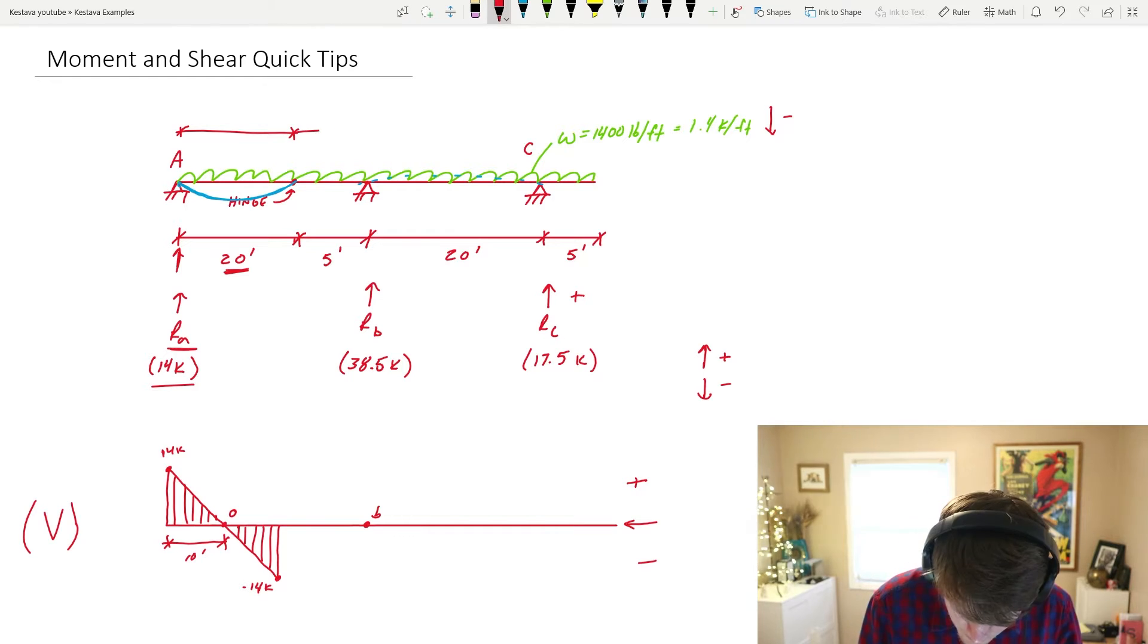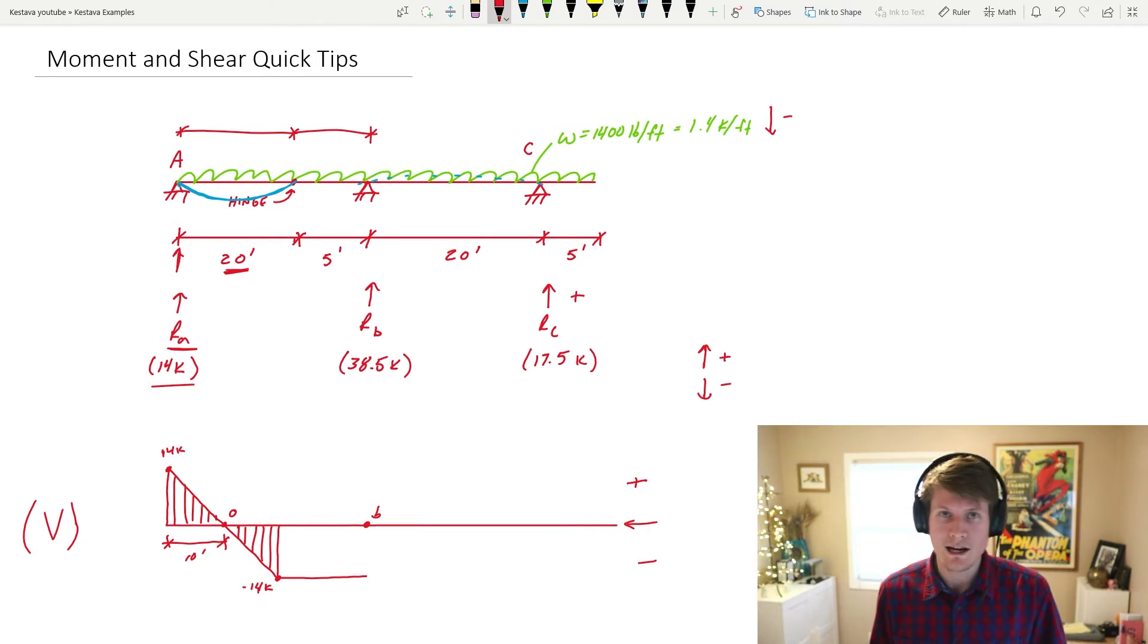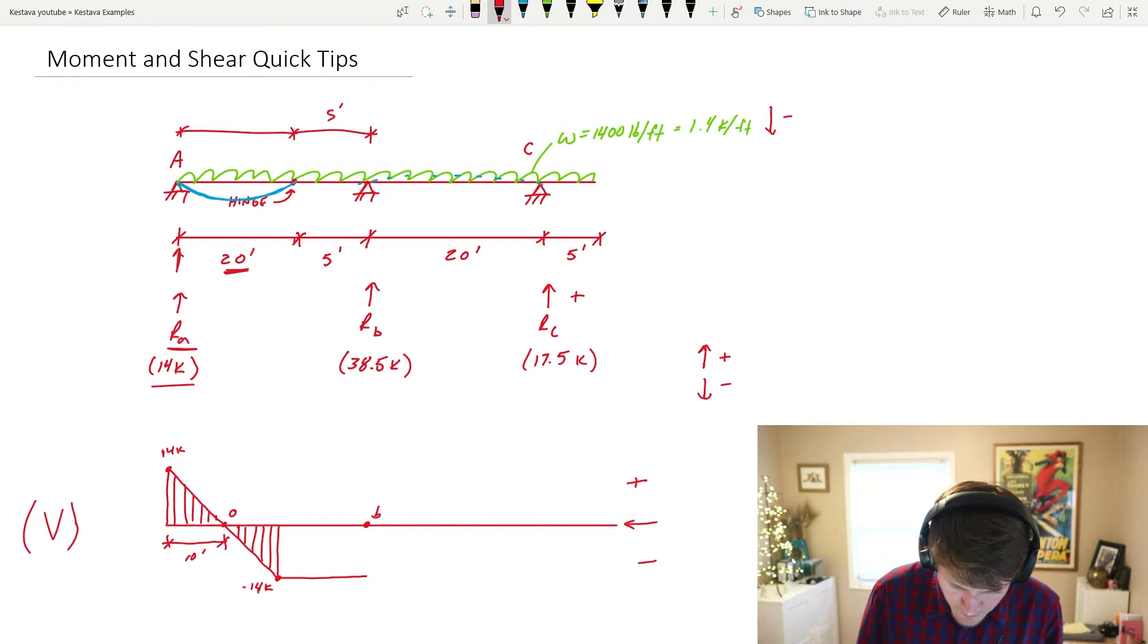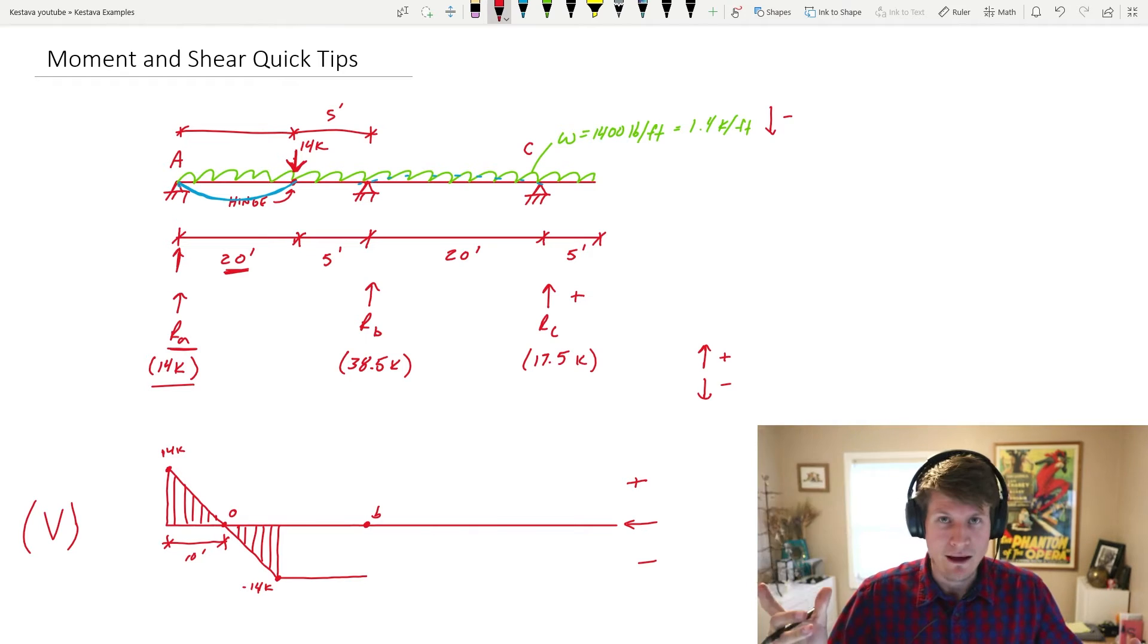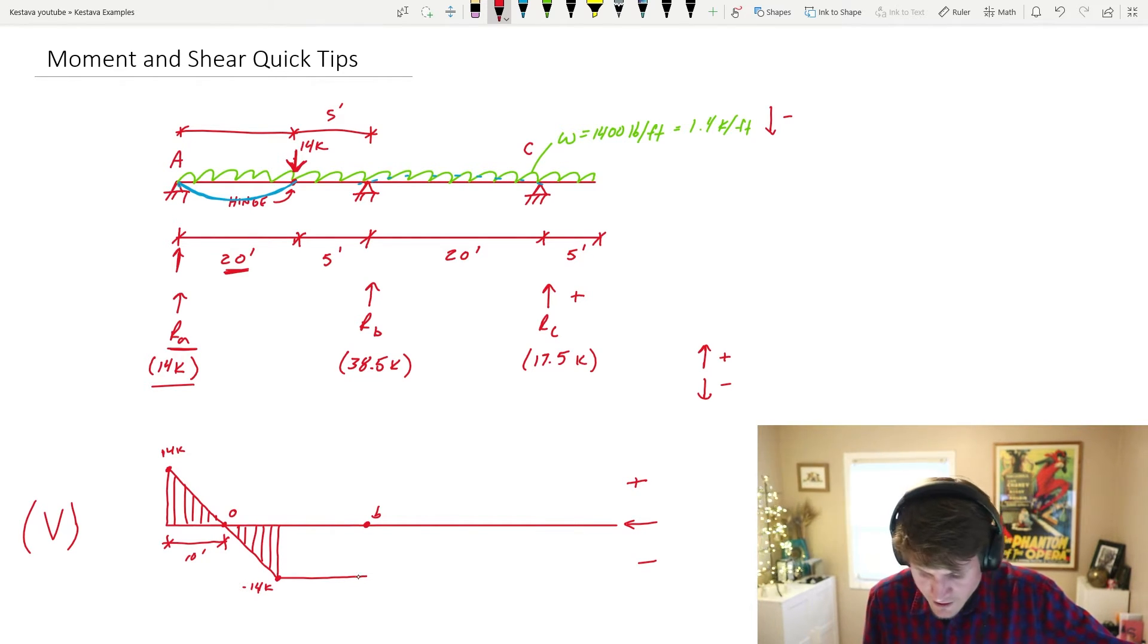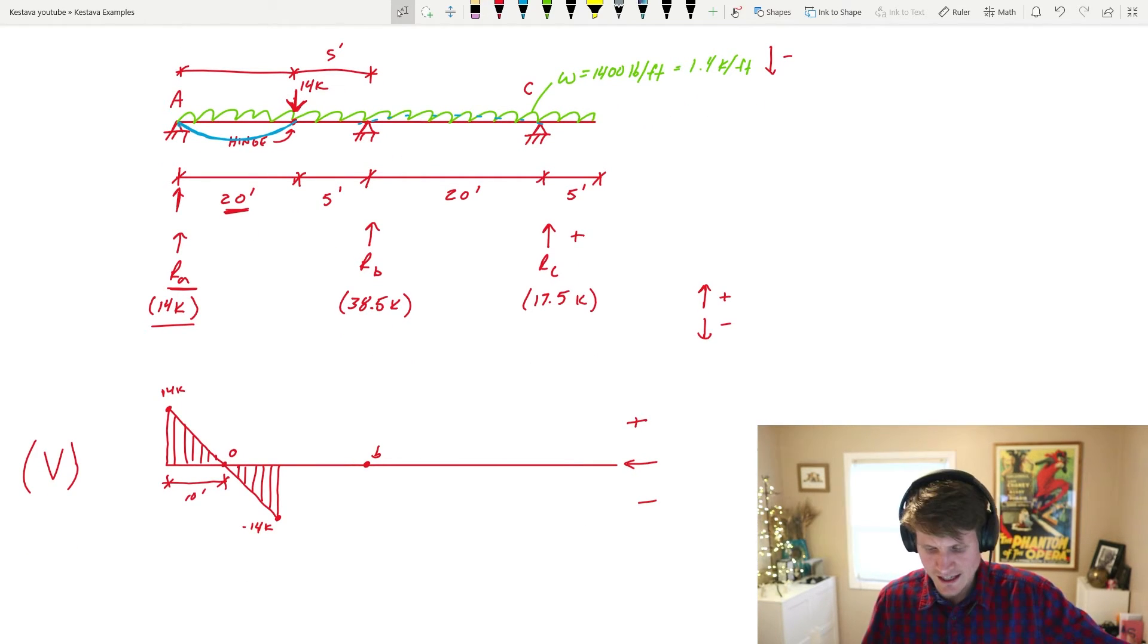We're not out of the woods yet because we still have reaction B that we need to get to. If there was no load for the remainder from the hinge to reaction B, then your shear diagram would be linear moving across because there's no additional loading. But we don't have that condition. We know that we do have the uniform load that is continuously being loaded from the hinge to reaction B, which means our shear is increasing as it gets to B.